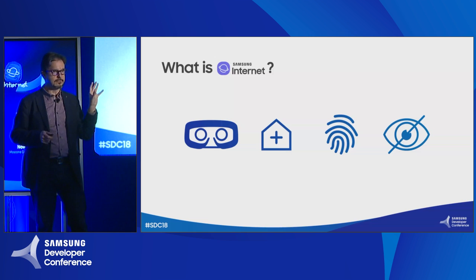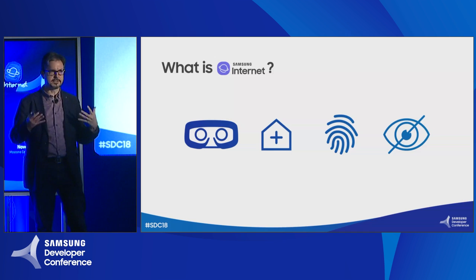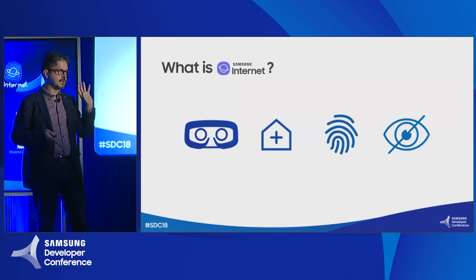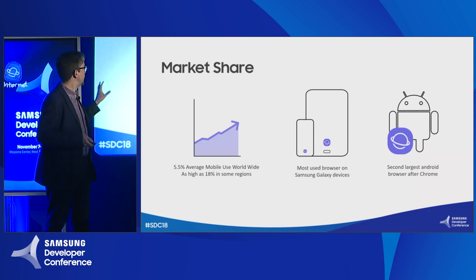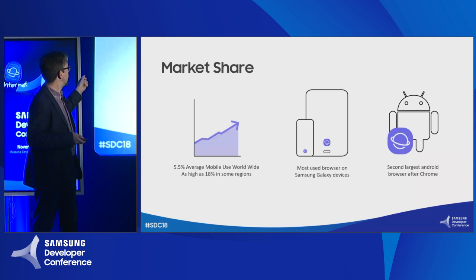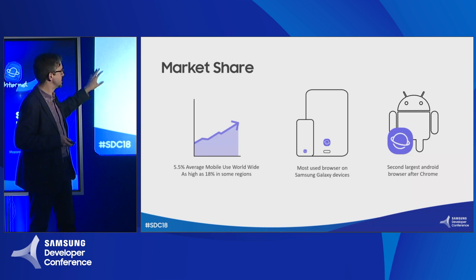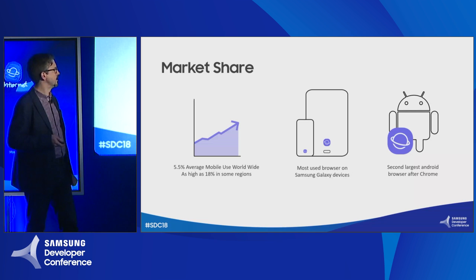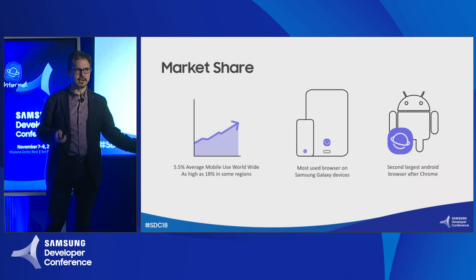One of the differentiators for Samsung Internet compared to other browsers is privacy — user privacy is very important to us. Overall worldwide, we have about 5.5% average mobile use across all mobile browsing, which is an incredibly high number. We're as high as 18% in some regions with extremely high Samsung usage. We're the most used browser on all Samsung Galaxy devices and actually the second largest Android browser after Chrome.